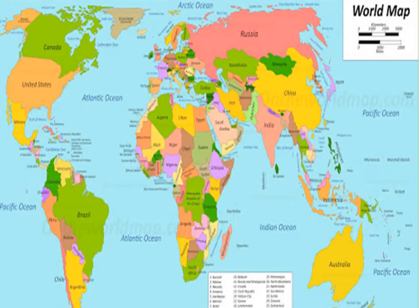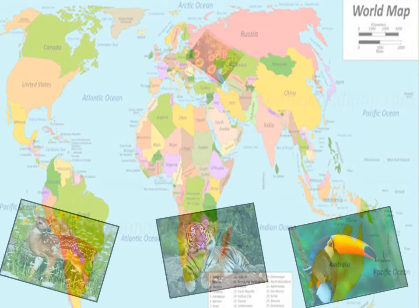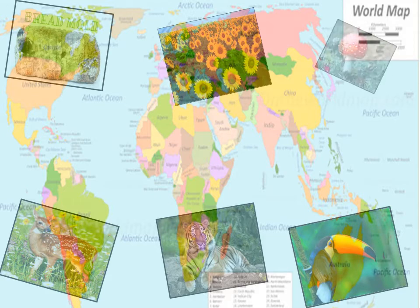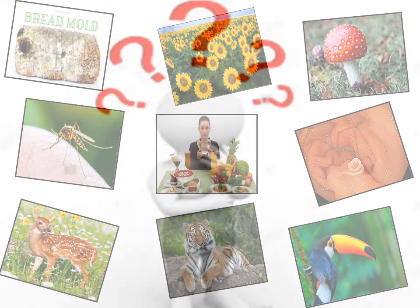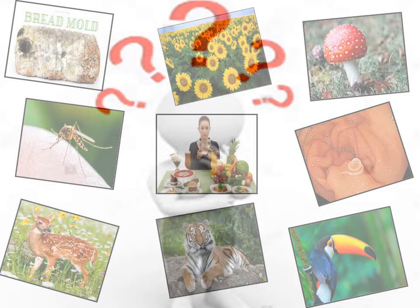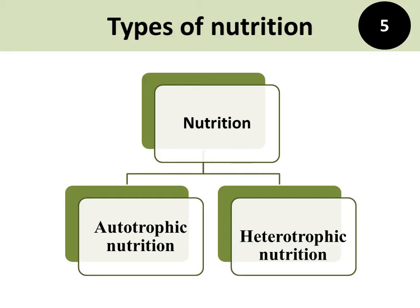We all know that earth consists of many living organisms which are different from each other. Have we ever wondered what is their intake — where do they get nutrition from? In this chapter, we are going to discuss the division of plants according to mode of nutrition. There are two types of nutrition: autotrophic nutrition and heterotrophic nutrition.